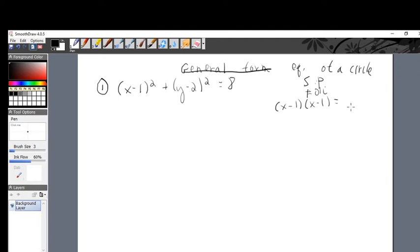That equals x times x, which is x². x times negative 1 is negative x. Negative 1 times x is another negative x. And minus 1 times minus 1 is plus 1. All together, that's x² - 2x + 1 on the right-hand side.